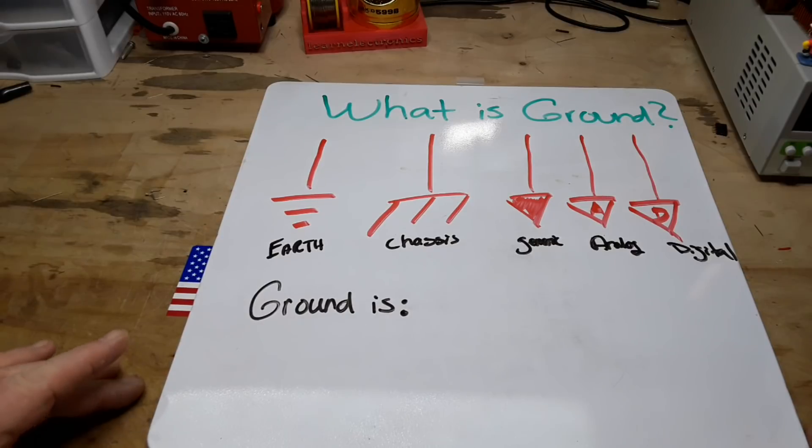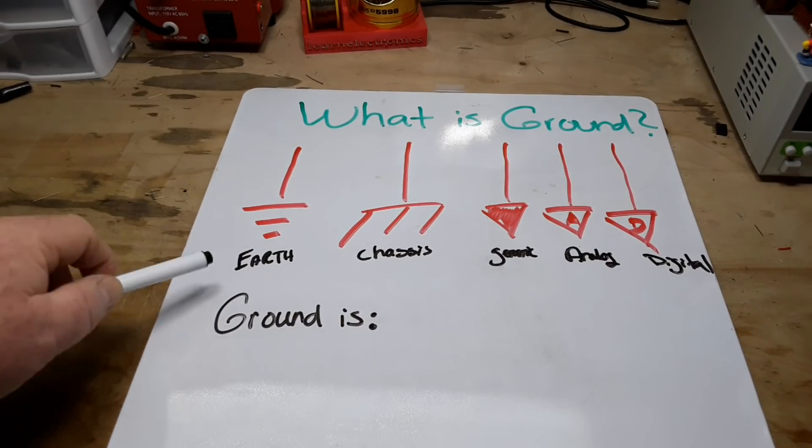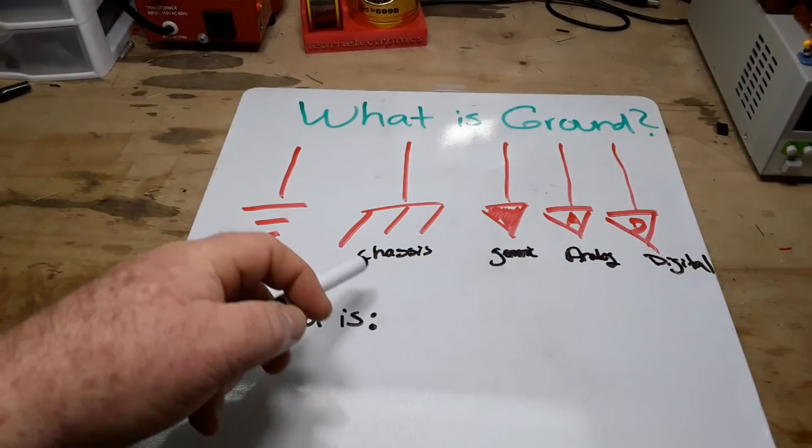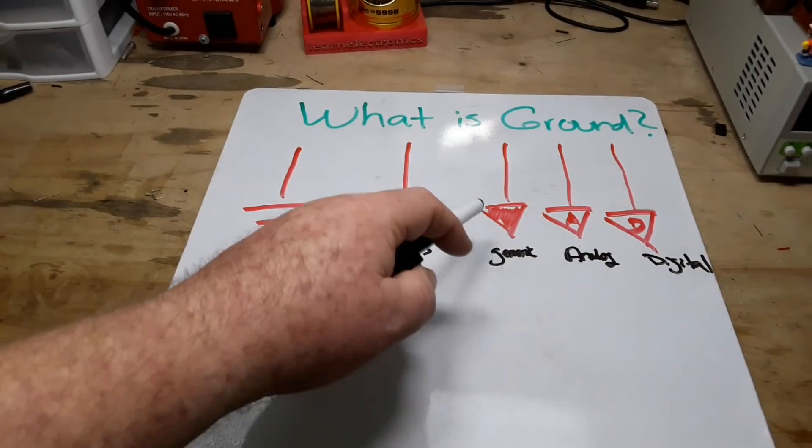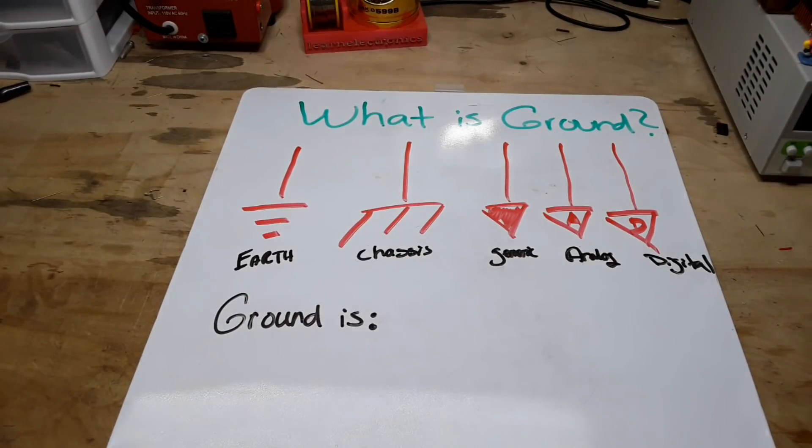So today, we are going to talk about ground. What is ground? What are these symbols? Earth ground, chassis ground, maybe you've never heard of it called a generic ground, that's what I call it, an analog ground and a digital ground. What is it? What's it mean?